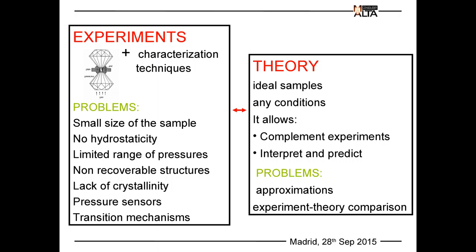The traditional approach to solve the crystal structure at high pressure couples a diamond cell with characterization techniques such as X-ray diffraction, neutron diffraction, and Raman spectroscopy. This approach faces problems: you need the material in hand, the sample size is small, you can have lack of hydrostaticity, lack of crystallinity, and you may not reach the pressures found in giant planets like Jupiter. Theory, on the other hand, allows you to deal with ideal samples under any conditions. It complements experiments and has interpretative and predictive abilities, though it relies on approximations and comparison with experiment is not always straightforward.